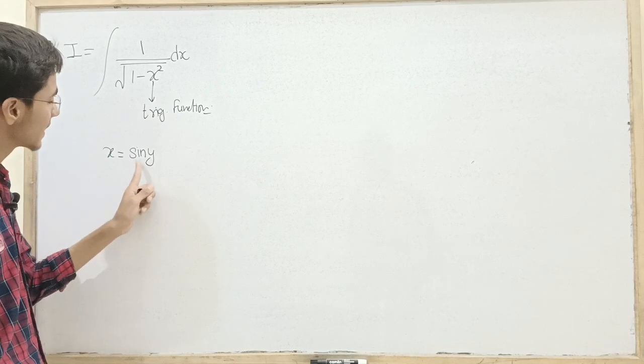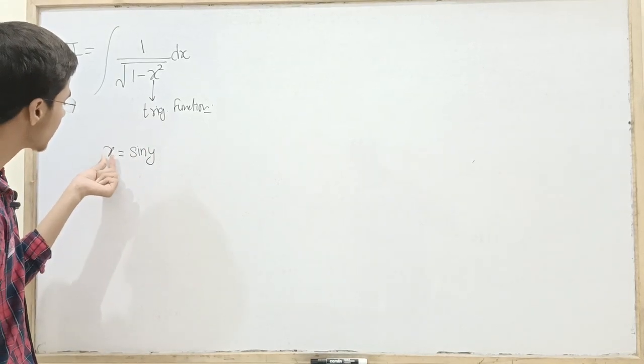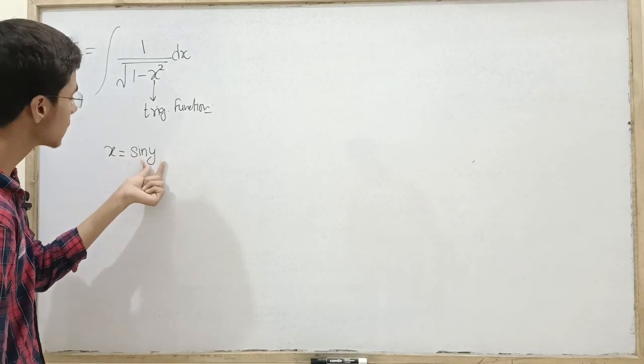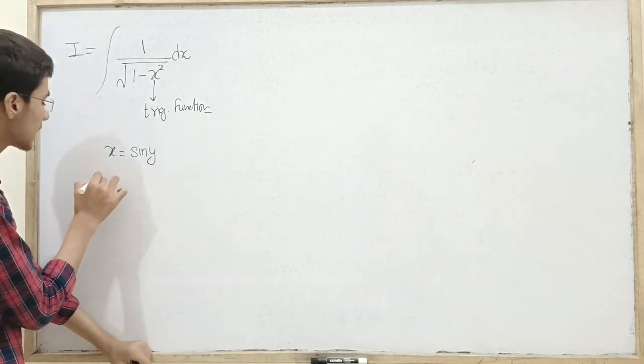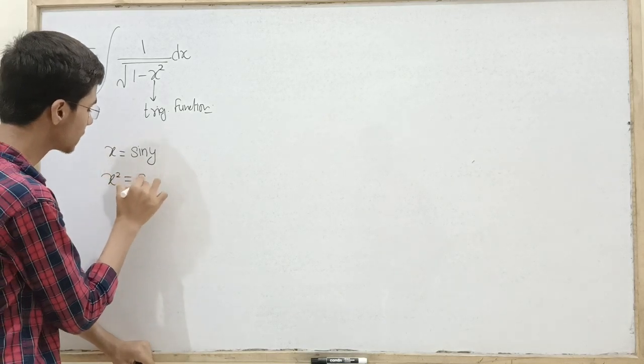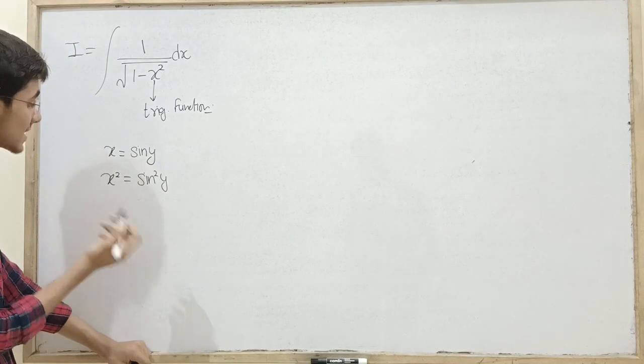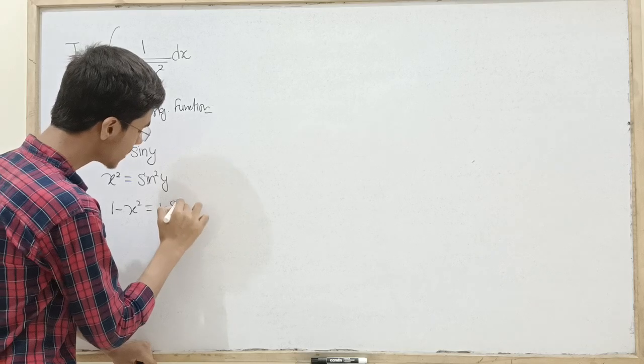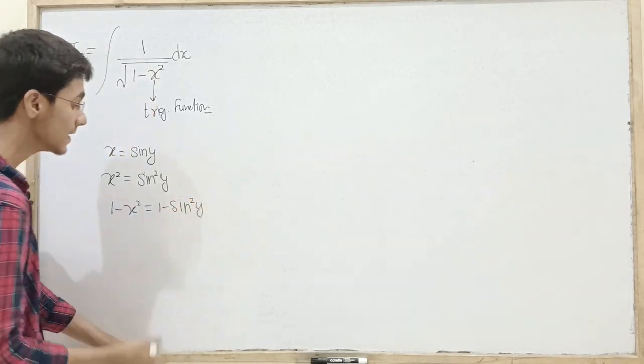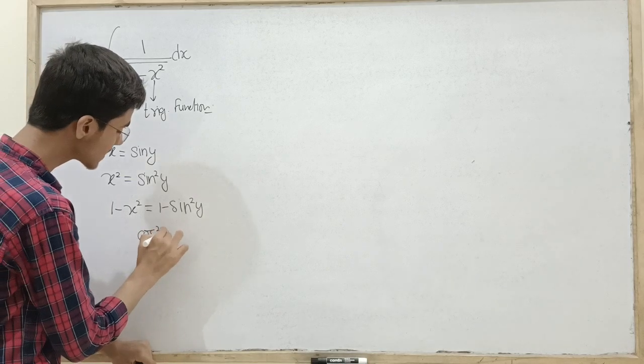Let's say x is sin of another variable y. Now this variable x is sin of another variable y. Now if you look at x square, this should be equal to sin square y. Then 1 minus x square will basically be 1 minus sin square y, which is clearly equal to cos square y.